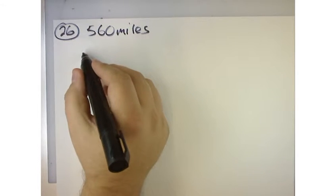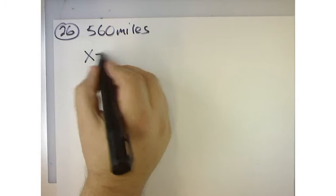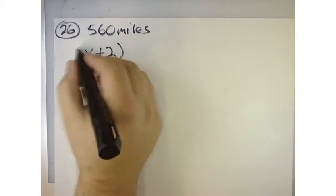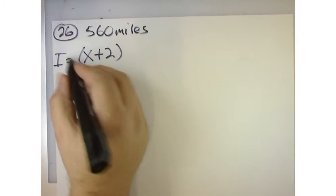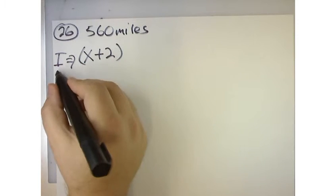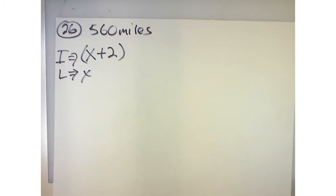The only thing it tells us is that they spent two more hours on the interstate. So the interstate, they spent two more hours and on the local highway, they didn't tell us. So we could say that the local roads, they spent X number of hours and then whatever that is, they spent two more hours on the interstate.